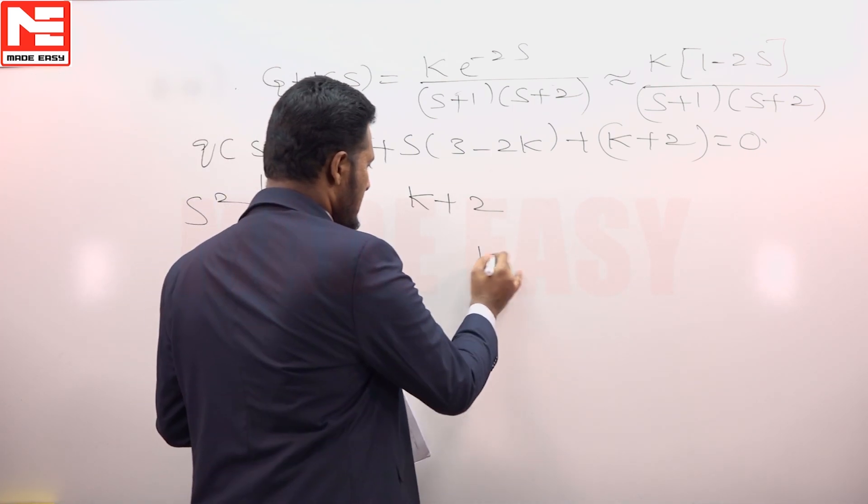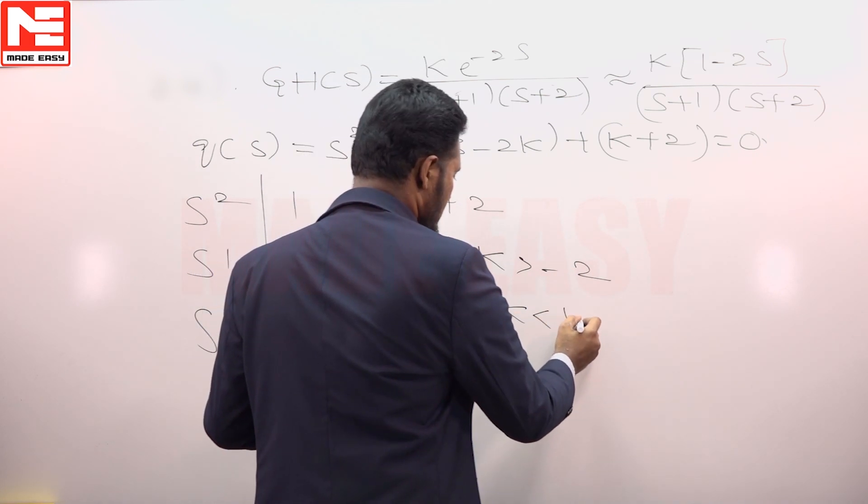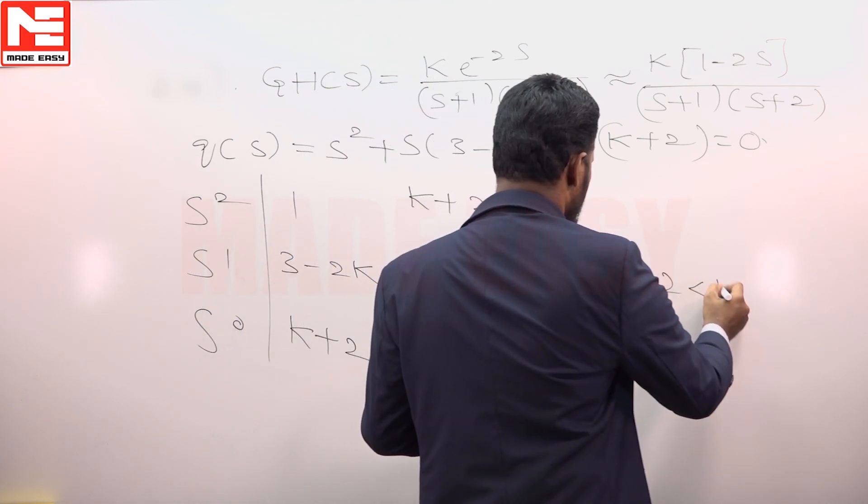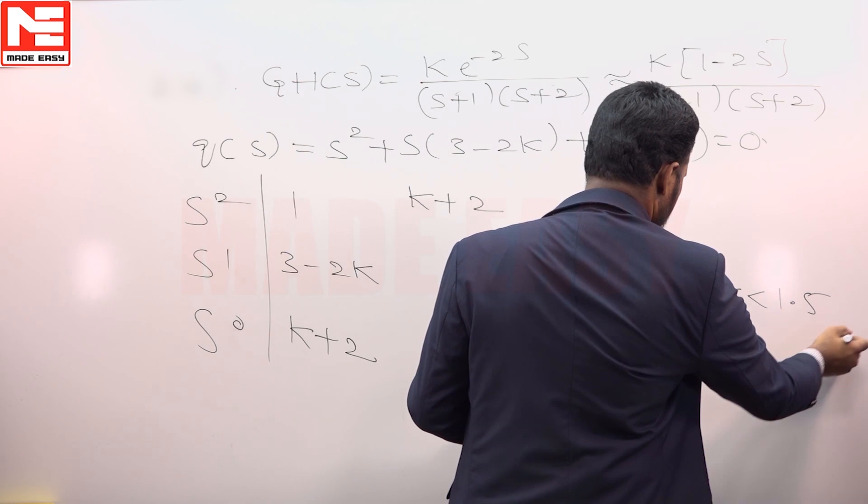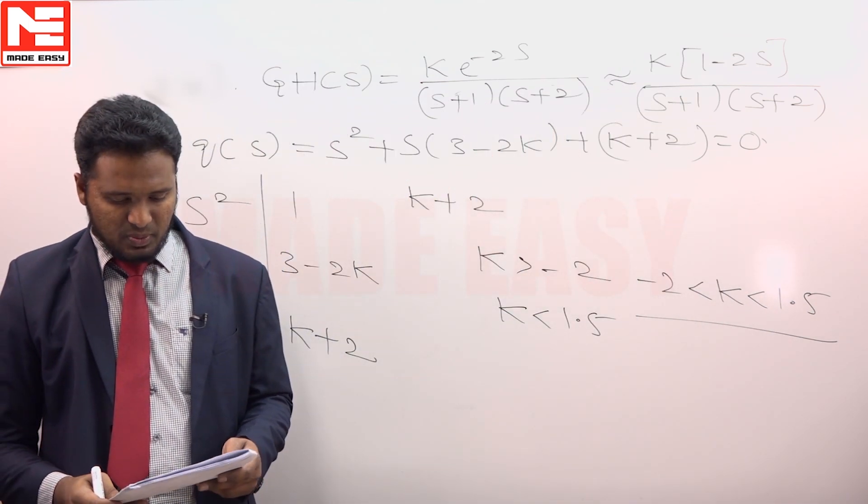So K greater than minus 2 and K less than 1.5. Minus 2 less than K less than 1.5 is the range of values of K for the system to be stable.